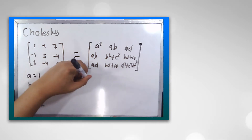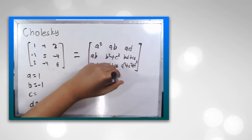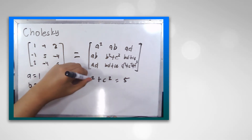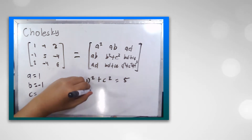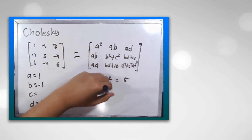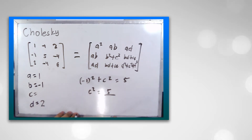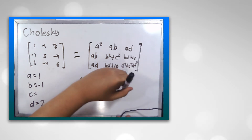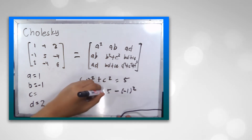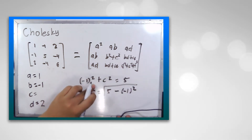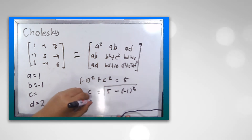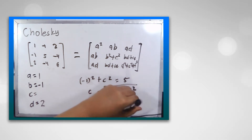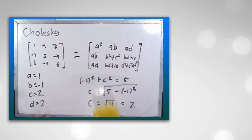b squared plus c squared is equal to 5. We know the value of b is negative 1, so we manipulate this: c squared is equal to 5 minus negative 1 squared. Squaring negative 1 gives 1, so c equals the square root of 5 minus 1, which is the square root of 4, equal to 2. So c is equal to 2.